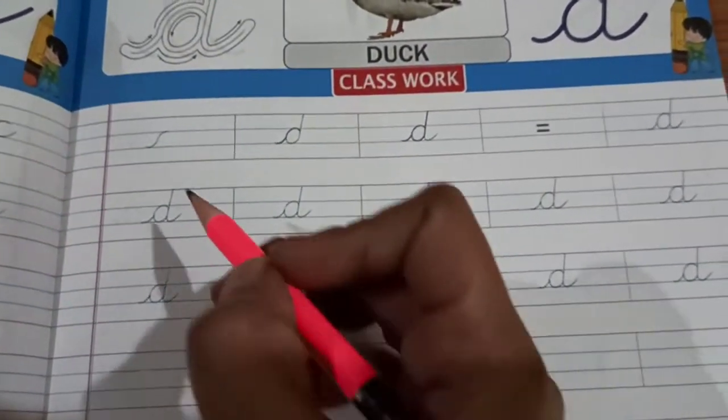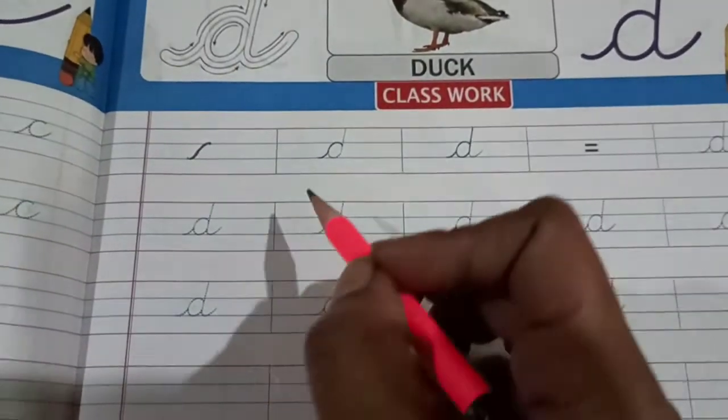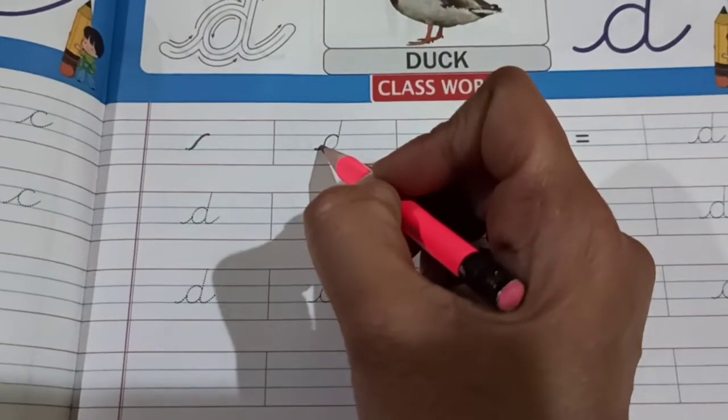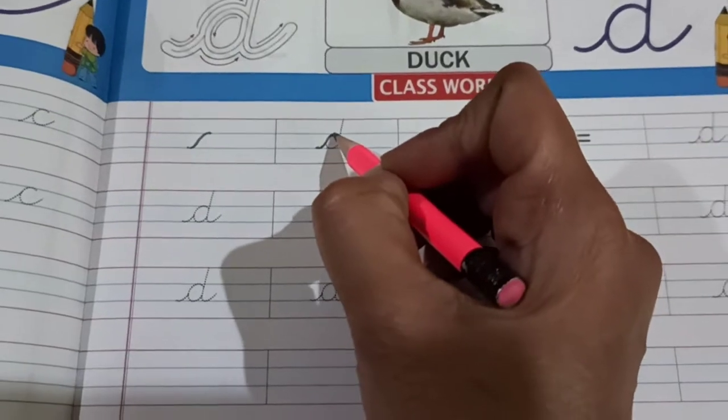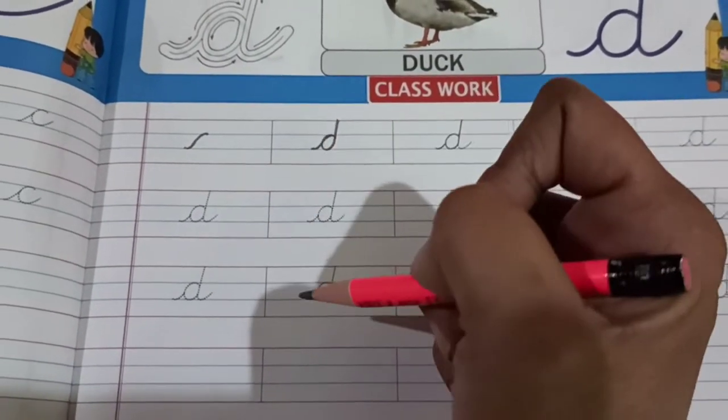First step is one slanting curve. Again, slanting curve, join that curve, go towards a straight line.